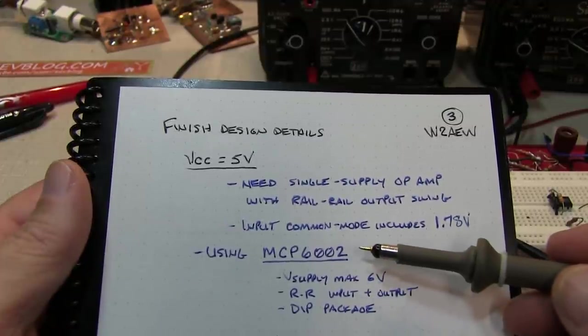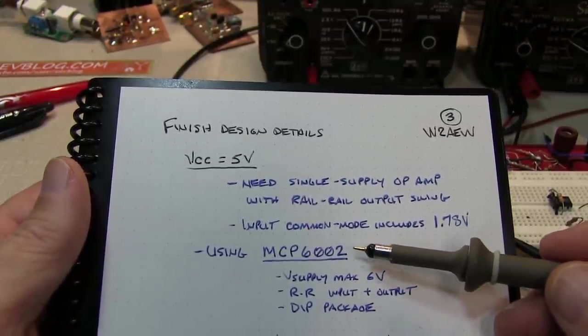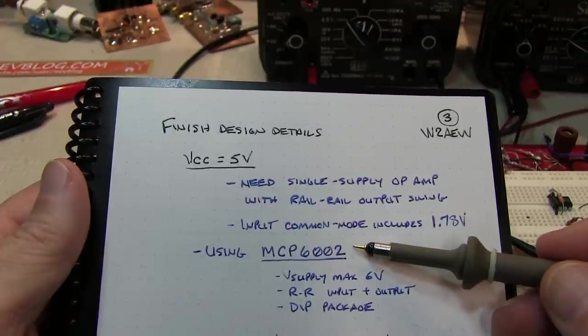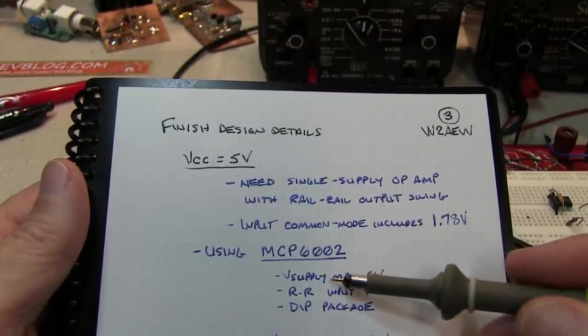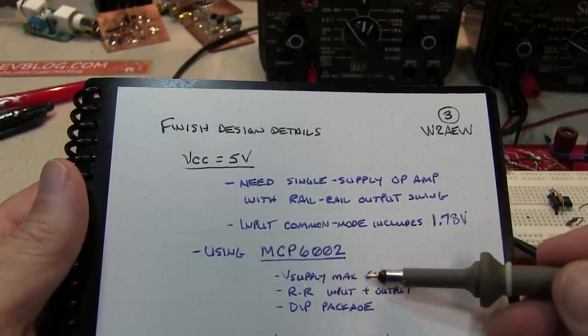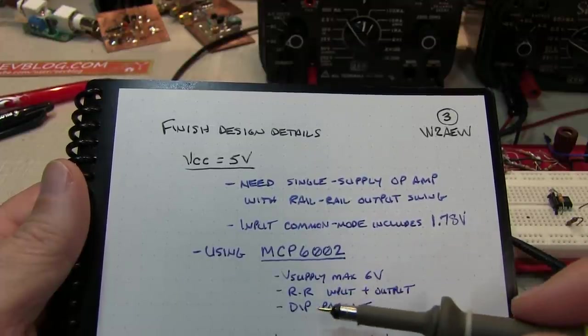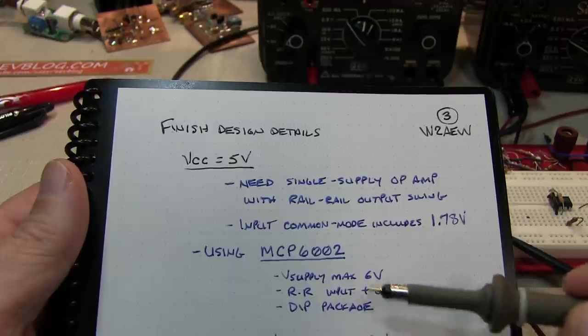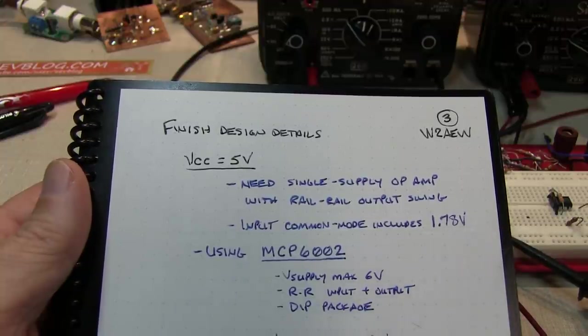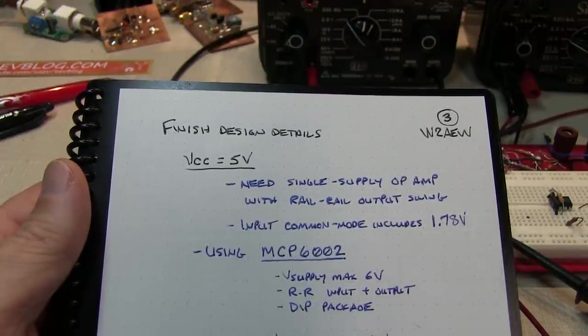A nice op amp that I have here that's very inexpensive and easy to use is this MCP6002 from Microchip. It's a single supply op amp that can be used up to a 6 volt supply, rail-to-rail input and output, and is in a DIP package. Really handy for prototyping, don't have to mess around with surface mount parts.